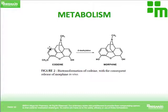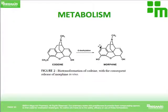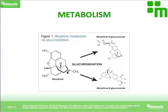Here, codeine is the substrate. O-dealkylation is the reaction carried out by the enzyme, and the product or metabolite of codeine is another drug known as morphine. Then morphine itself undergoes further metabolism — it is metabolized to morphine-3-glucuronide or morphine-6-glucuronide via a reaction called glucuronidation. So morphine was the product of the first reaction, but in this second reaction morphine is the substrate, and morphine-3-glucuronide and morphine-6-glucuronide are the metabolites.